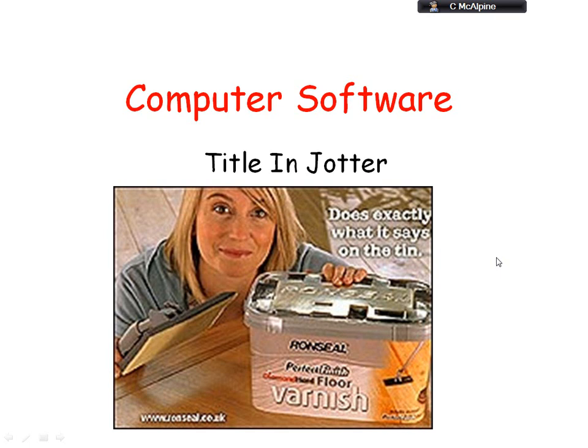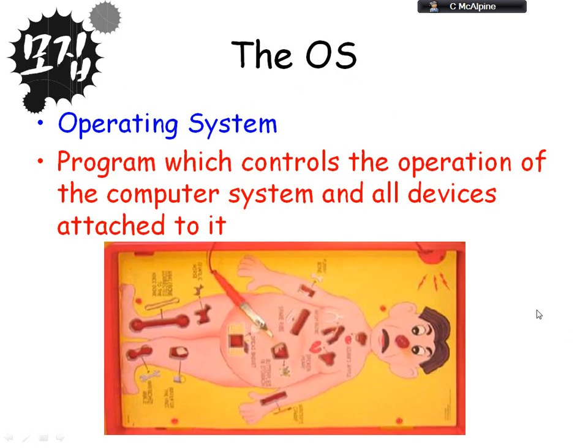We're going to talk about the computer software unit, which is mainly about the operating system and some of the different utility programs it has. First of all, the operating system — you should hopefully remember from Standard Grade — controls input and output devices, security, file management, memory management, and several other important features. It's constantly running when the computer system is turned on until it's turned off.